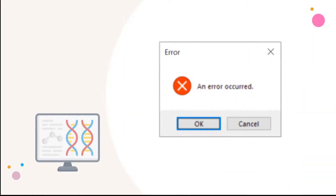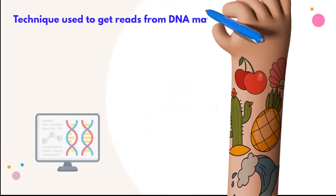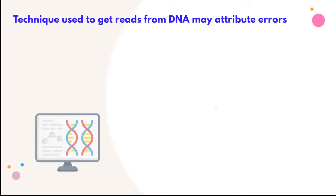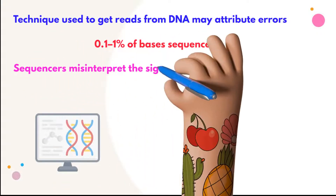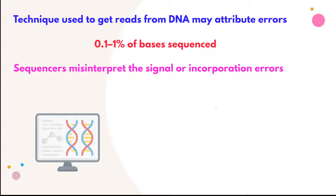All measurements have errors, and the reasons why these errors exist depend on the technology. Sequencing errors typically occur in approximately 0.1 to 1% of bases sequenced. Such errors are more common in reads with poor quality bases, where sequences misinterpret the signal or when the wrong nucleotide is incorporated.